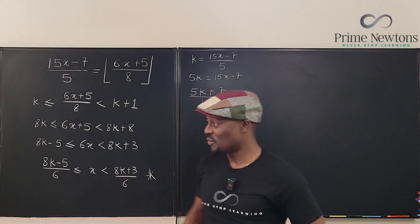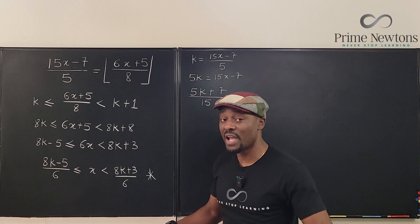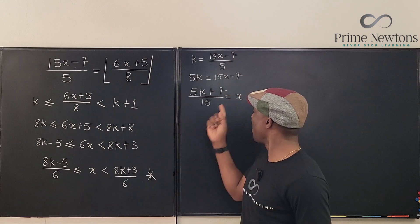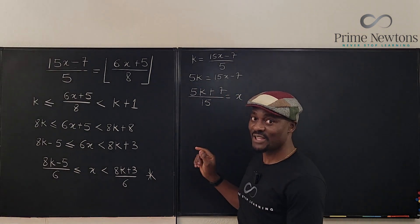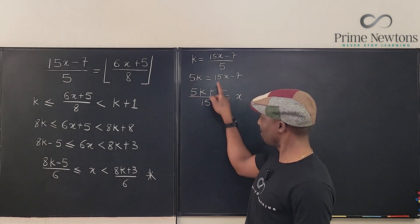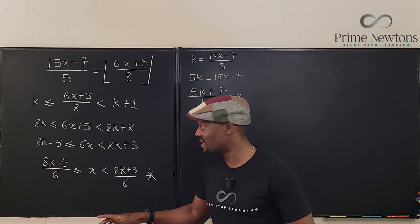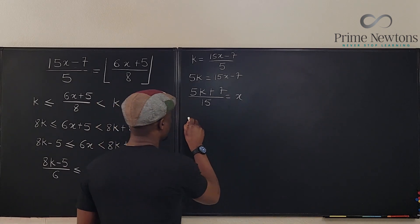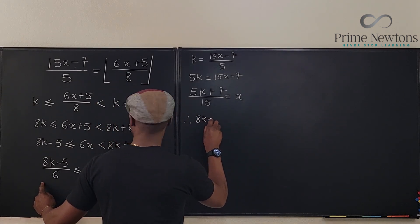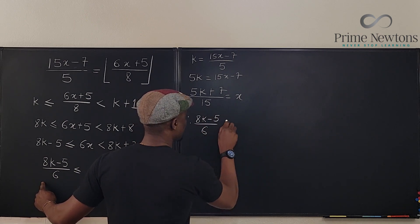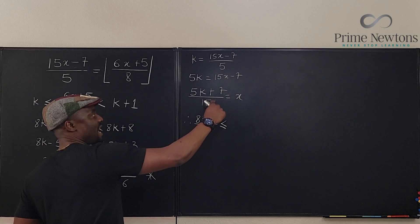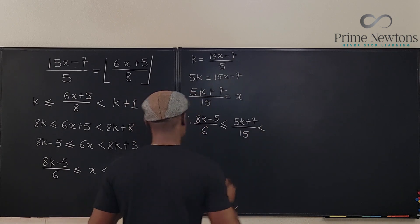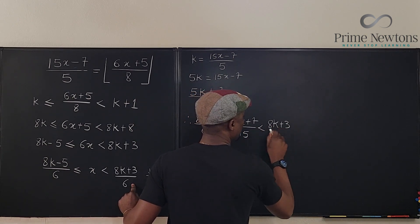Once we've written x in terms of k and have inequalities connecting x with k, we're ready to start solving. We substitute x = (5k + 7)/15 into the inequality: (8k − 5)/6 ≤ (5k + 7)/15 < (8k + 3)/6.